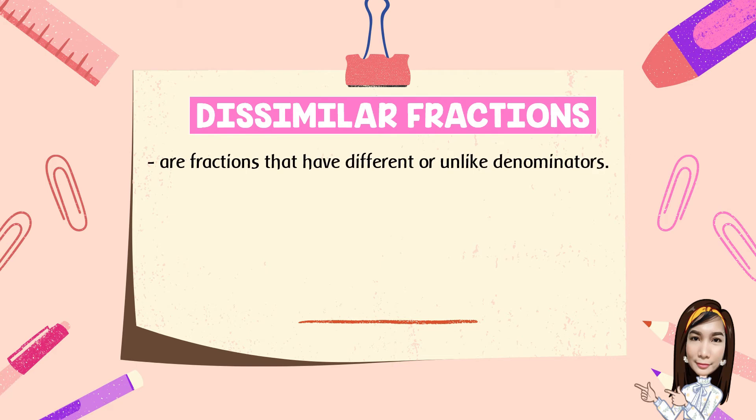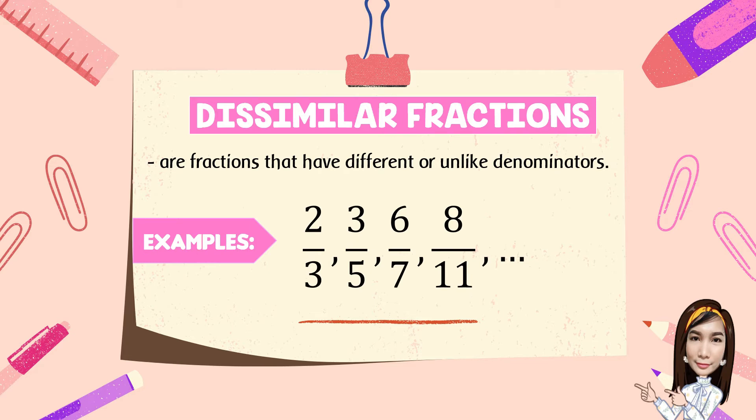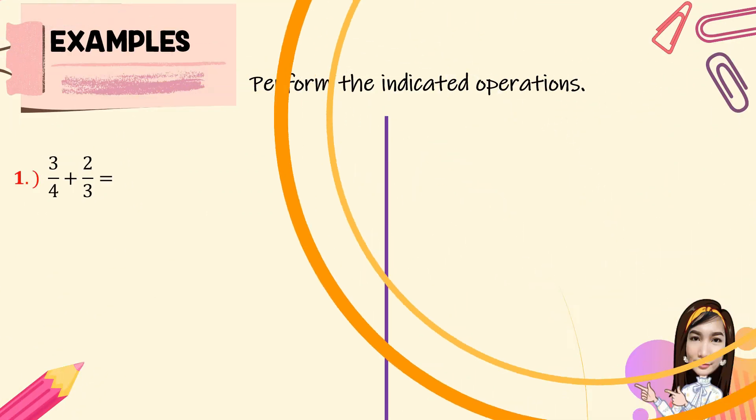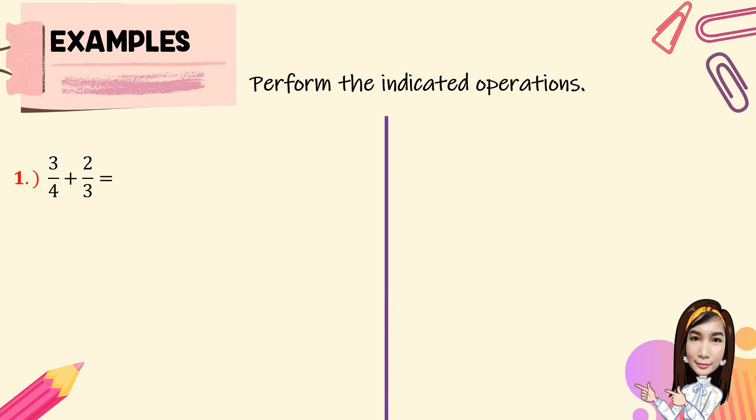Dissimilar fractions are fractions that have different or unlike denominators. Examples are 2 over 3, 3 over 5, 6 over 7, 8 over 11, and so on — we have different or unlike denominators. Before we proceed with our lesson, let's have a recall on adding and subtracting fractions with unlike or different denominators.